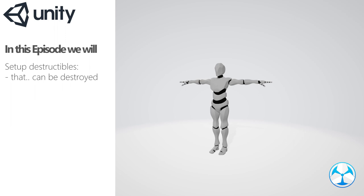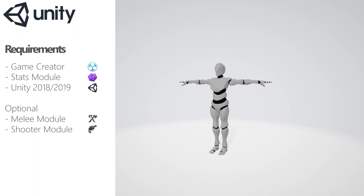Hello everyone. In today's video we will be doing something fun - we'll create destructibles, or destroyables, however you want to call them. For some reason it's always been really fun to destroy things in games, and it can even be annoying for a player if the world is completely static. In order to create this we want Unity, Game Creator, and the Stats module. For this tutorial I'll also be using the Shooter or Melee module for our triggers. What I'll be showing today is one of the ways to do things, but it can be done in different ways. So let's dive in.